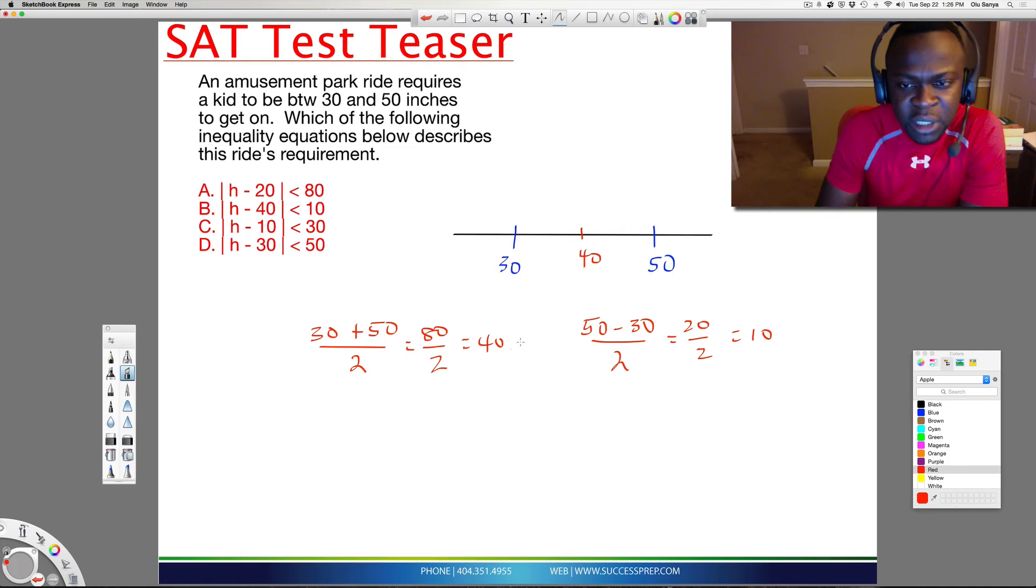Now, what this 40 gives us is the middle value, the middle number of inches that we need here. But this 10 tells us the gap. It tells us the gap between that. So meaning that as long as a kid is about 40 inches tall, there's still a buffer of 10 inches here and 10 inches here.